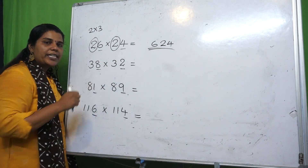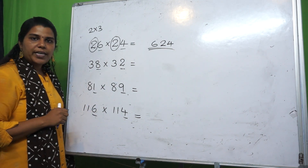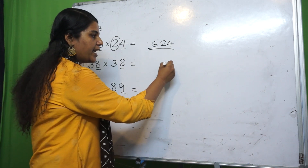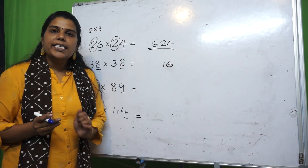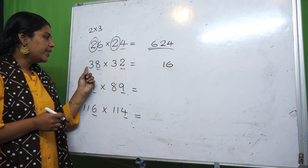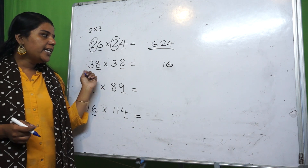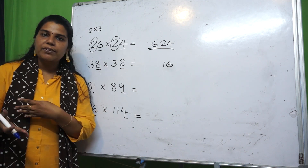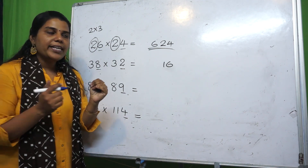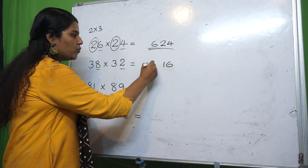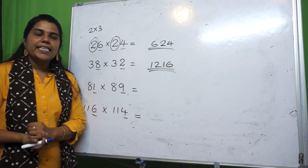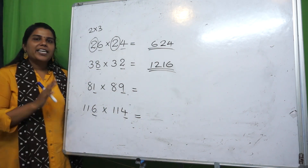Second question: the ones digits are 8 and 2, which add up to 10. The tens digit is 3, and the next number after 3 is 4. So we multiply 3 and 4: 3 times 4 is 12. The last two digits are 8 times 2, which is 16. The answer is 1216.